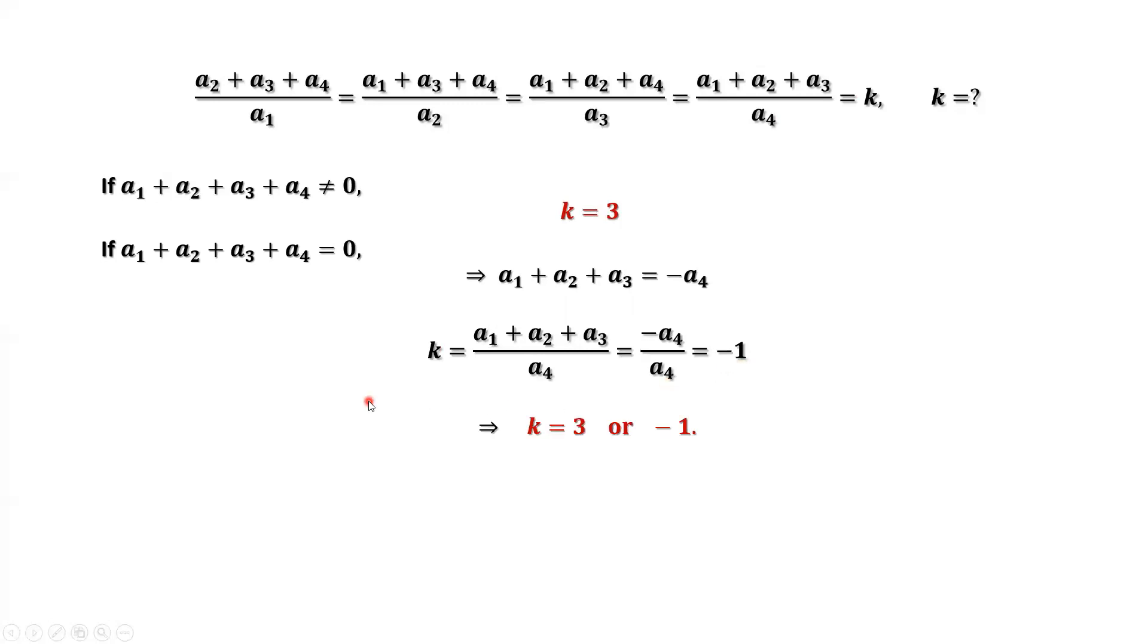In summary, we have two values for K. K equals 3 or negative 1. That's all. Thanks for watching, and see you next time.